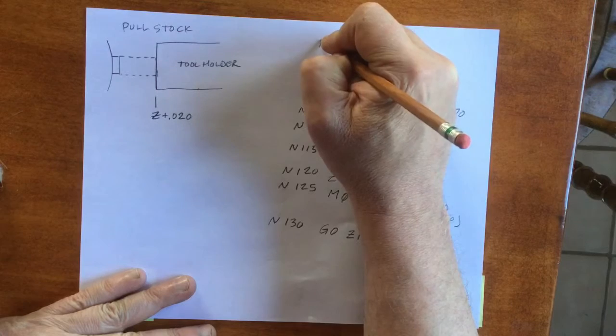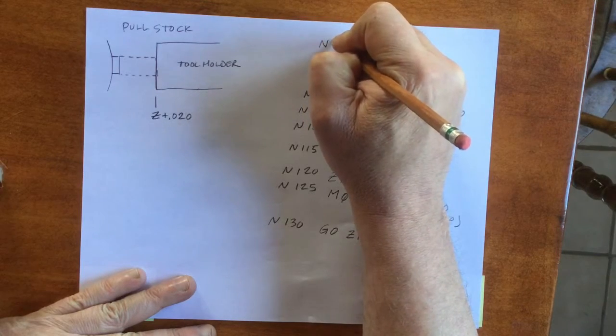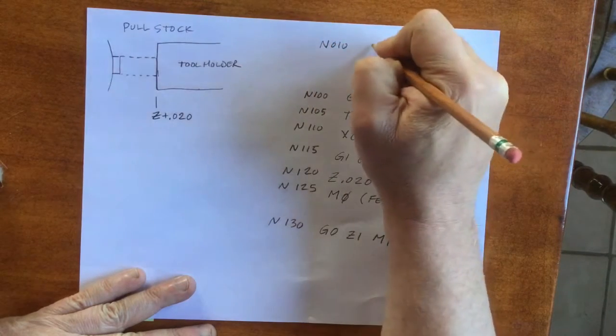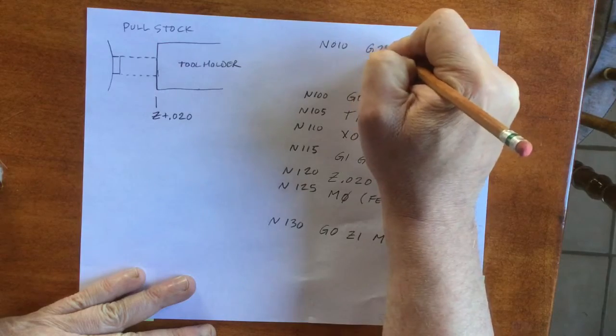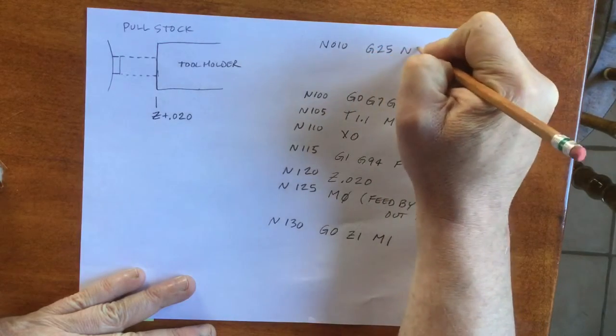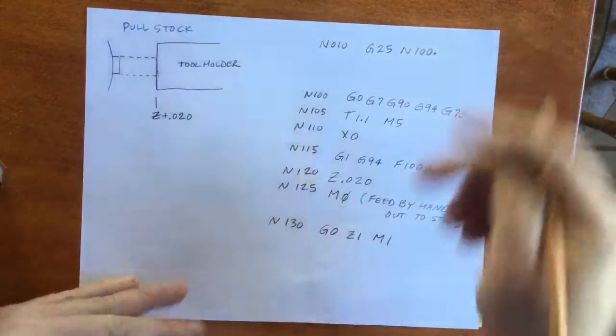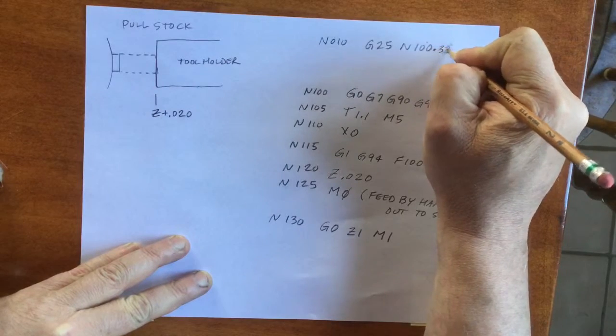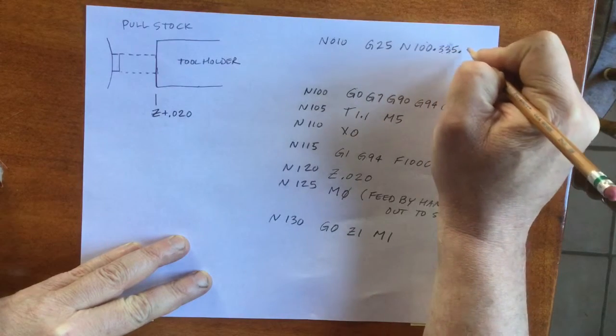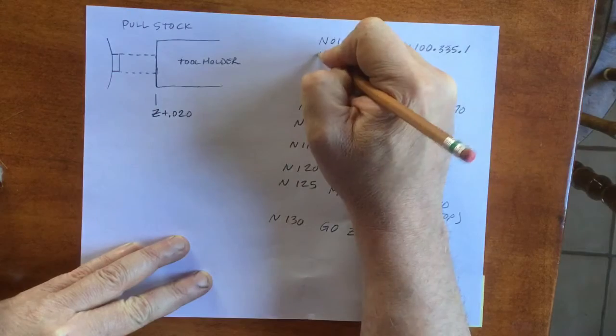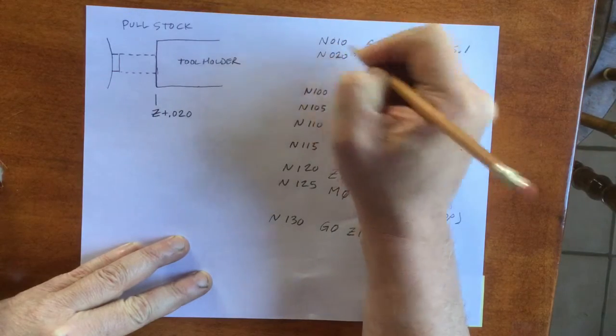One last trick I use to stay organized. I'll make one program for the entire part. I'll use a G25 conditional jump. You input the beginning and ending lines of the operations that you want to do and how many times you want to do them.